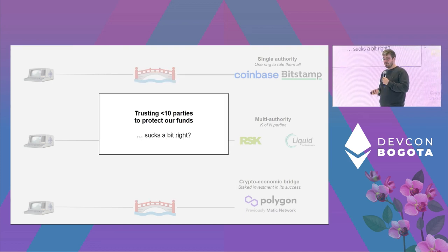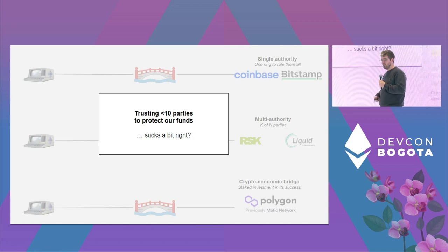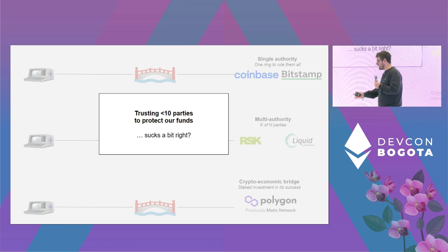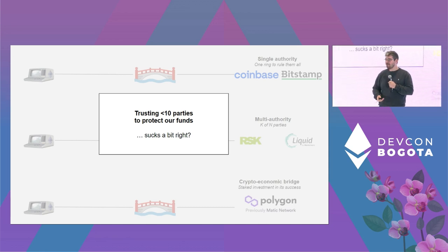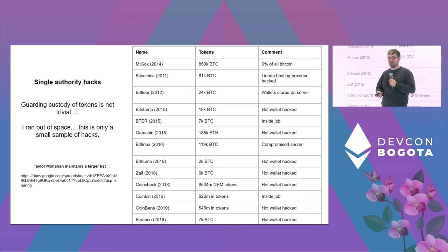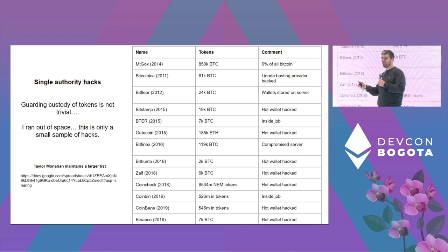In all these cases it's problematic — we're trusting fewer than 10 parties to protect billions of dollars. The whole point of cryptocurrencies was to remove intermediaries, and now we've just reintroduced them. It doesn't just fail ideologically — it fails practically because they keep getting hacked.